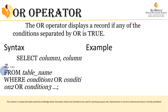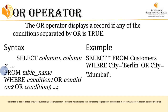The example for the OR operator is: SELECT * FROM customers WHERE City = 'Berlin' OR City = 'Mumbai'. Any one condition — whether the city is Berlin or the city is Mumbai — it will take that record. Even if only one condition is true and the other is false, it will still return the record.